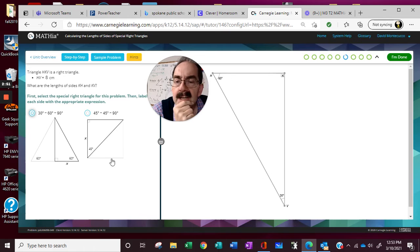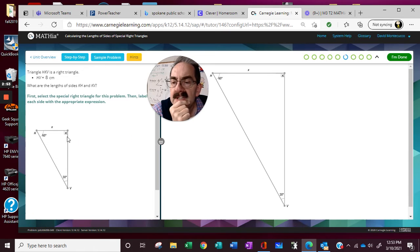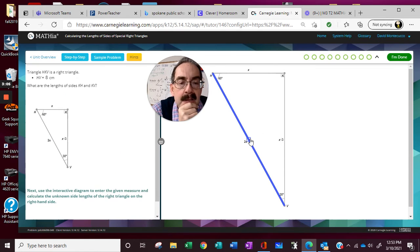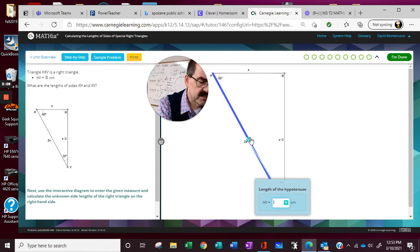30, 60, 90. So the long leg is always radical 3. And this is always double the short leg.